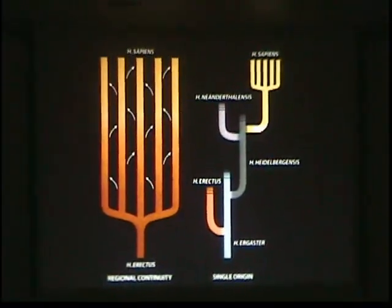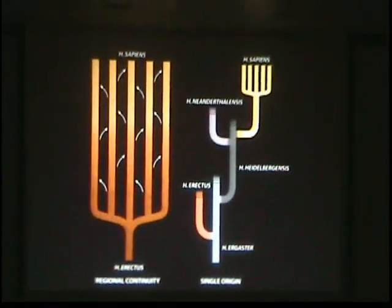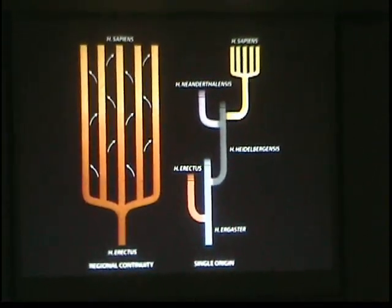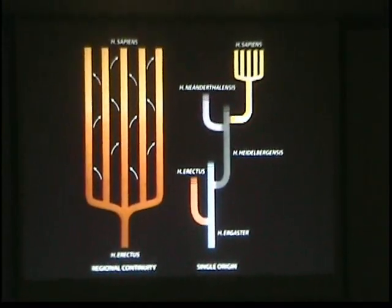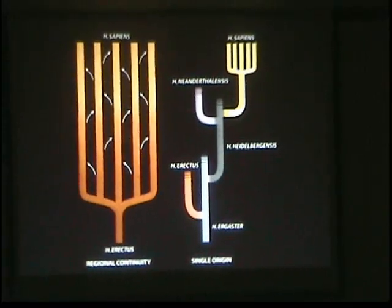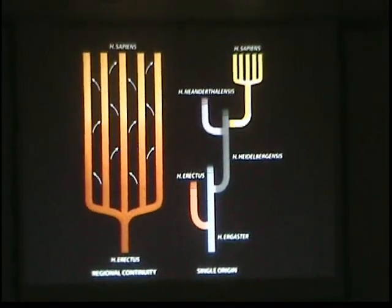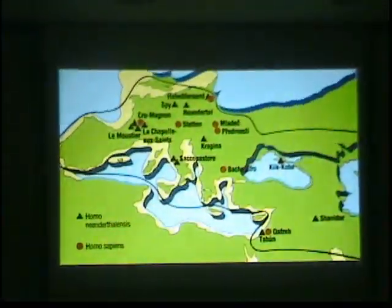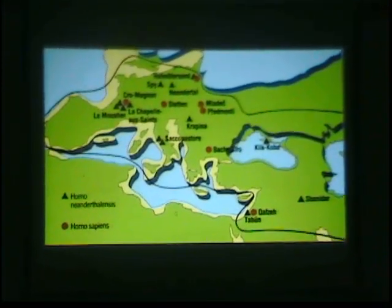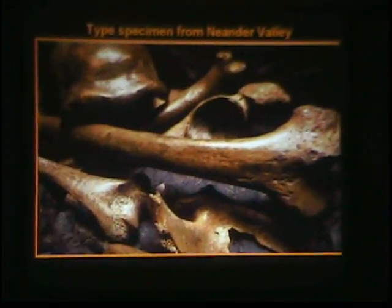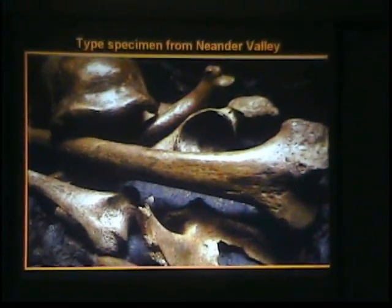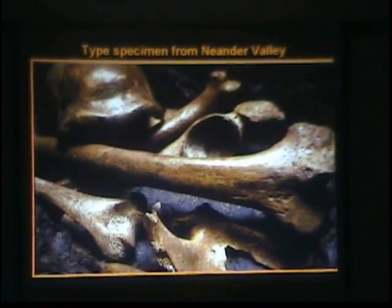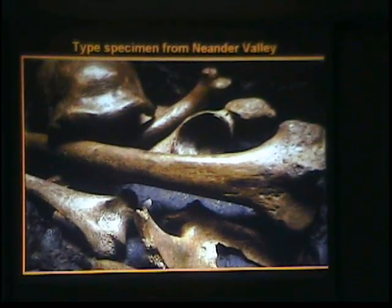Now the question of whether Homo sapiens and Neanderthals are separate species has been going on for quite a while. There were two different models. One was the so-called regional continuity, which was the idea that there was only ever one species, and that Neanderthals are just early Europeans. And the other one on the right is the single origin idea, which is the Neanderthals branched off as a separate species. And that model is now pretty much the winner. The Neanderthals were geographically isolated to Europe and Central Asia. And this is the type specimen from Neander Valley, which gave the name Neanderthal. And that is the only hominid that was known when Darwin wrote the origin of species.